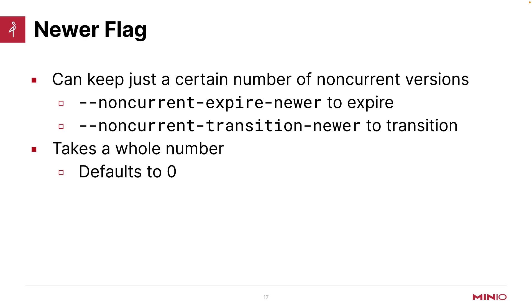If I have a whole bunch of older versions of an object and I don't want to worry about the age of them, I can use the newer flag to only keep a certain number of non-current versions, no matter how old they are. A common case is to set non-current expire days zero or non-current transition days zero, and then use the newer flag to say 'but keep three versions.' So it will expire or transition older versions, but I'm going to keep a few of them.